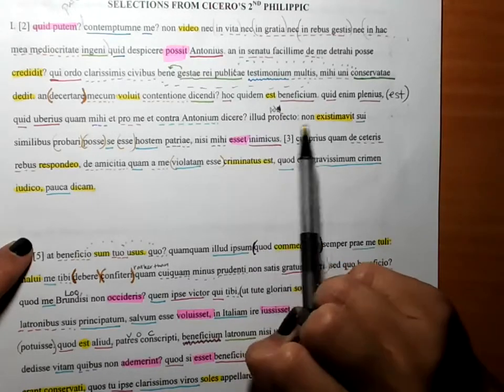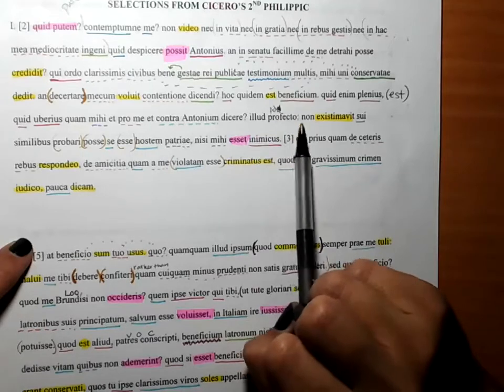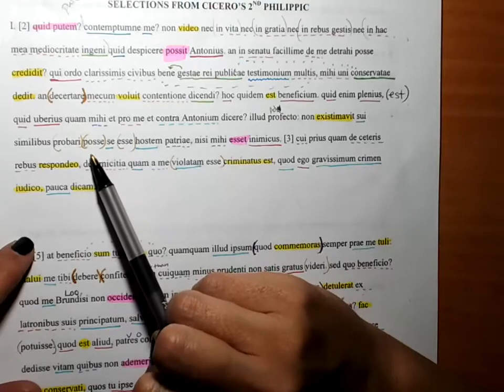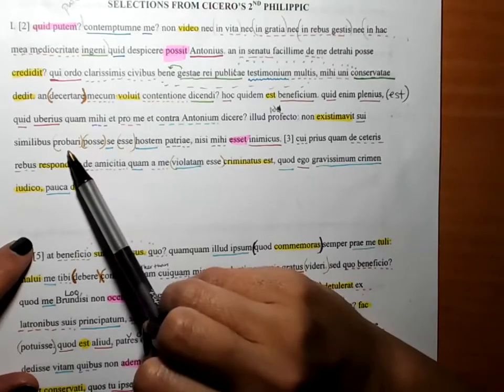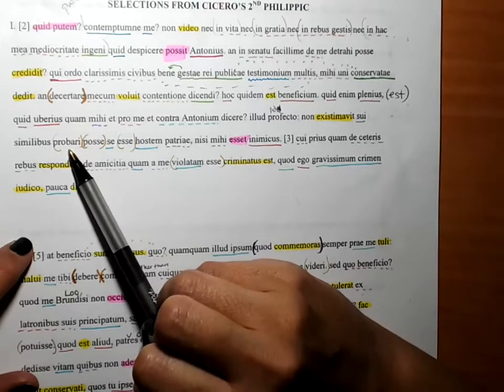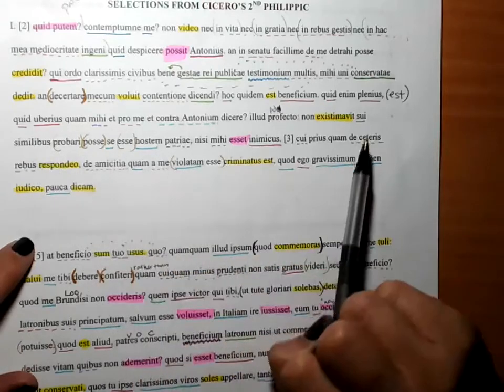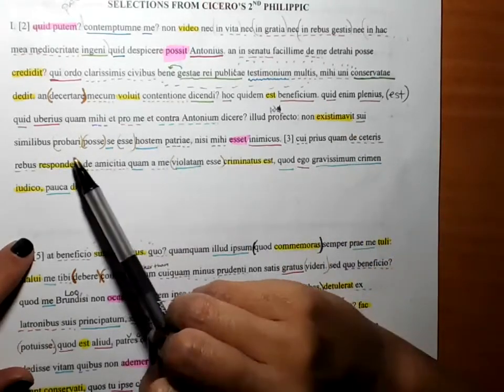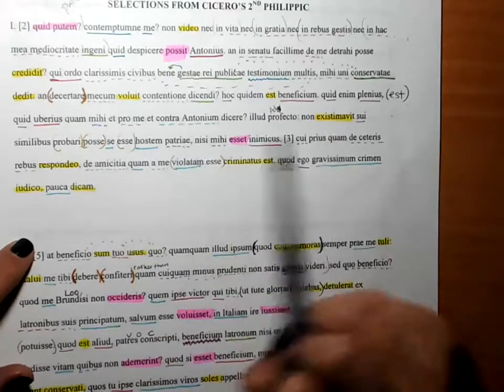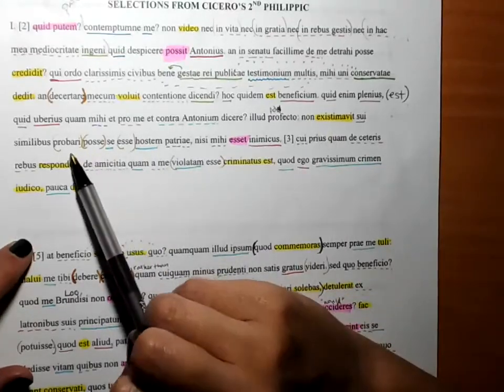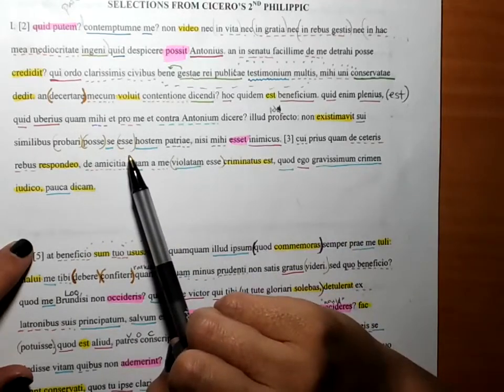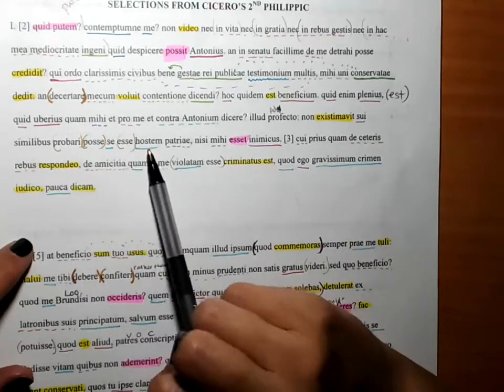He didn't judge that he was able to be proven to men similar to himself. We'll talk about this in class, okay? So he didn't judge that he would be able to be proven to men similar to himself, that are proven to be an enemy to the fatherland, or of the fatherland, unless he were an enemy to me.